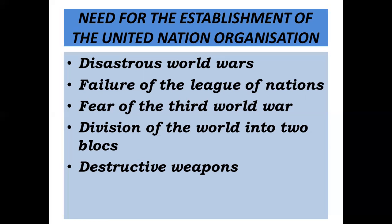At the end of the Second World War, the world was divided into two power blocs — USA and USSR took control of Germany, forming the capitalist bloc and the communist bloc. Then there were destructive weapons: the atomic bombs dropped on the two Japanese cities of Hiroshima and Nagasaki shook the conscience of the whole world. It became necessary to formulate a world organization to control the invention and production of new-age weapons which threatened the survival of mankind.